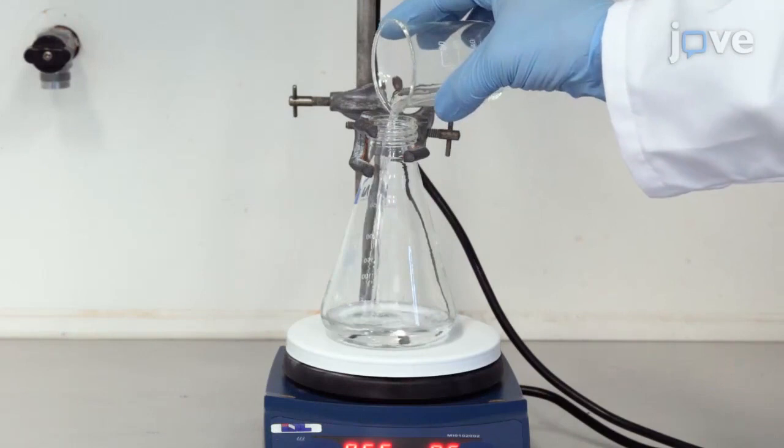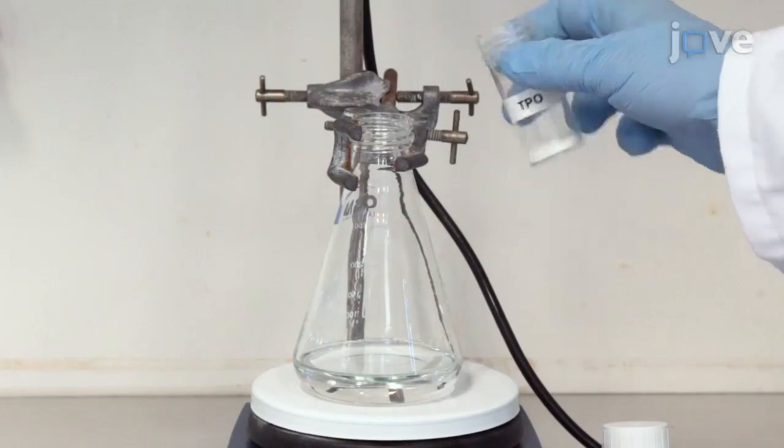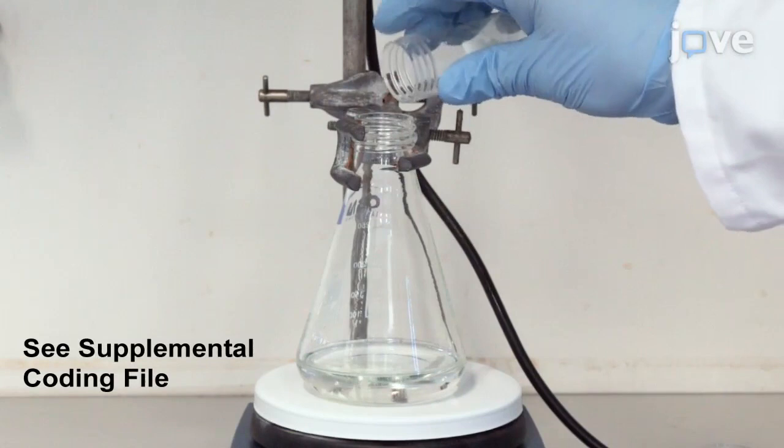To begin, pour 50 grams of 1,10-decane diol diacrylate in a 500 milliliter Erlenmeyer flask. Add 1.0 grams of TPO and 0.40 grams of BBOT to the flask.